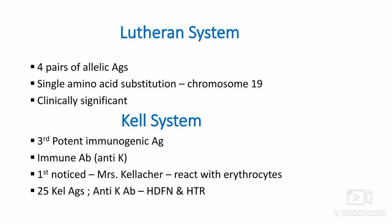Lutheran system: It has four pairs of allelic antigens and represents a single amino acid substitution in the Lutheran glycoprotein at chromosome 19. Antibodies against this blood group are very rare and are mostly not considered clinically significant.